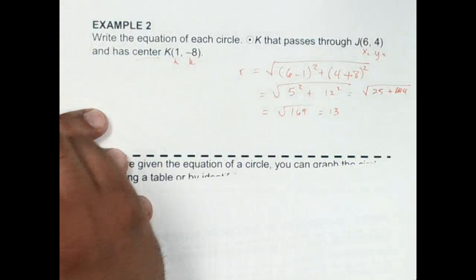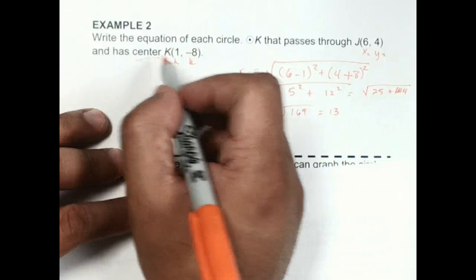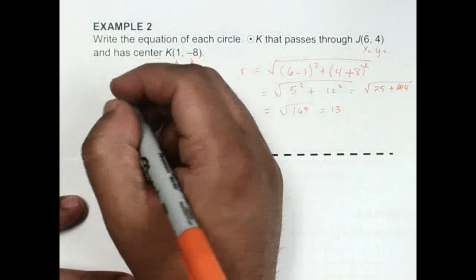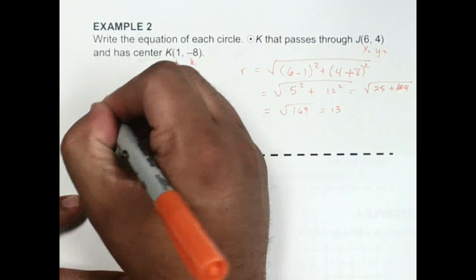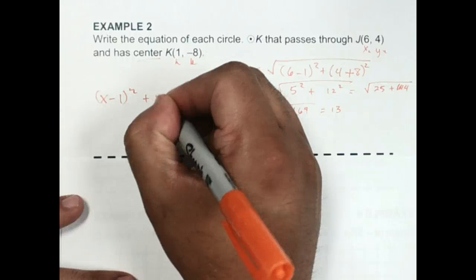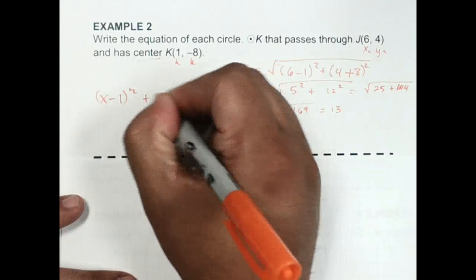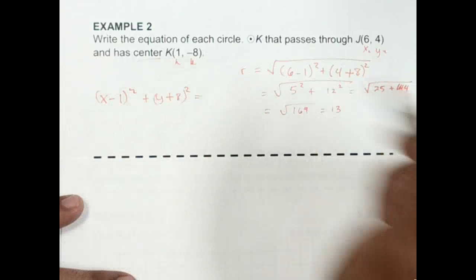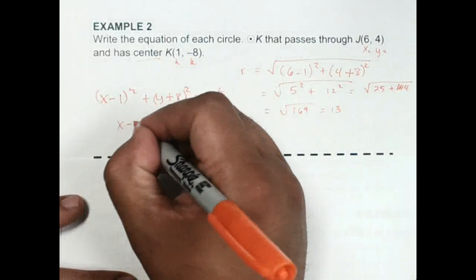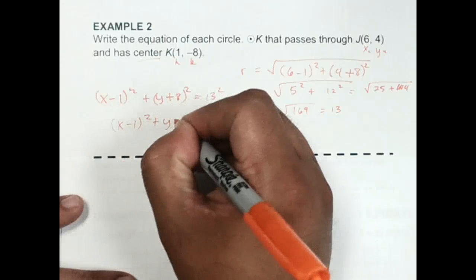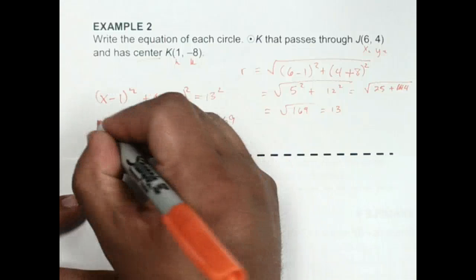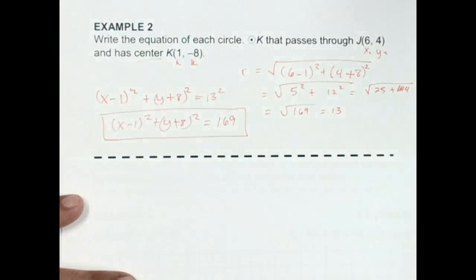Now we can put this into the formula. Remember, we're using our h and k, so we're going to use (x - 1)² + (y - (-8))² is equal to our radius squared, which ends up being (x - 1)² + (y + 8)² = 169. That would be our equation.